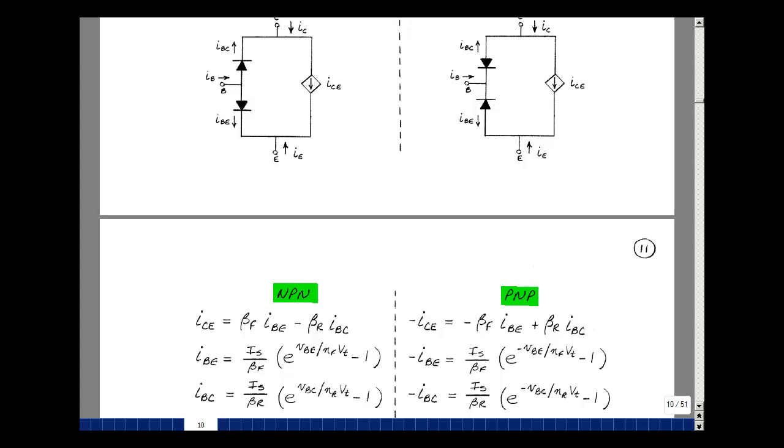Our textbook uses the SPICE notation for describing the currents in the transistor. This is very confusing because of all the minus signs and the directions that are actually in the opposite sense.